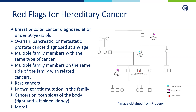Other considerations include multiple family members with the same type of cancer, multiple family members on the same side of the family with related cancers, rare cancers, cancers on both sides of the body such as right and left-sided kidney cancers. And of course, if someone in the family has a known genetic mutation, that is a reason someone may want to consider genetic testing for themselves.